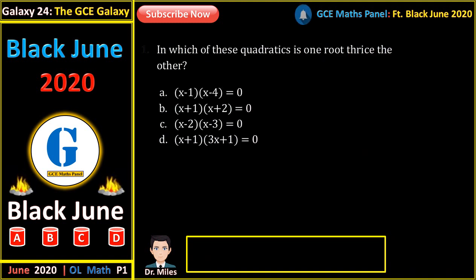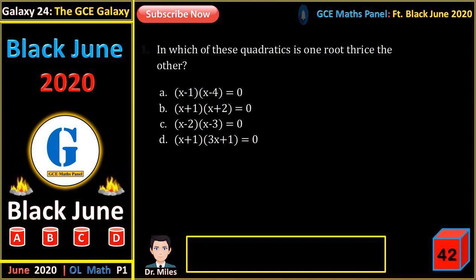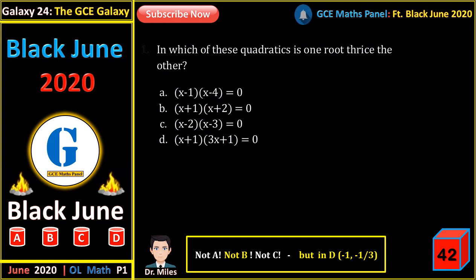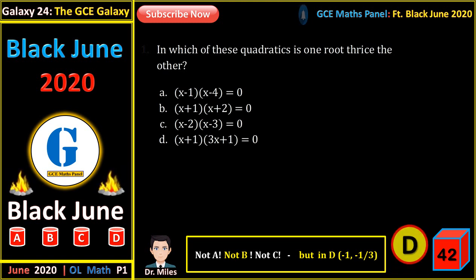In which of these quadratics is one root thrice the other? In A, one root is 4 times the other. In B, one root is 2 times the other. In C, one root is 1 and a half times the other. The only answer here is D.